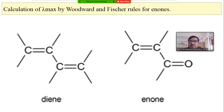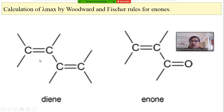Diene means two, and 'en' means double bonds. So the presence of two double bonds in a compound is called a diene, but we need to have only conjugated diene. It is called a conjugated diene because we have carbon-carbon double bond, then single bond, then double bond — that is, double bond, single bond, double bond. Therefore it is called an alternating diene or conjugated diene.